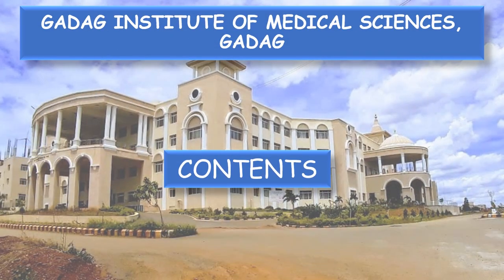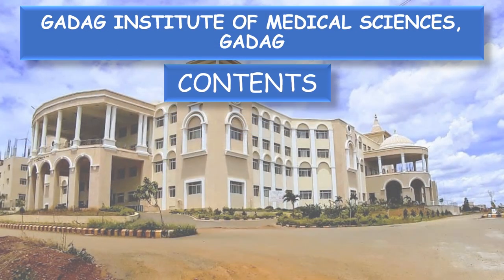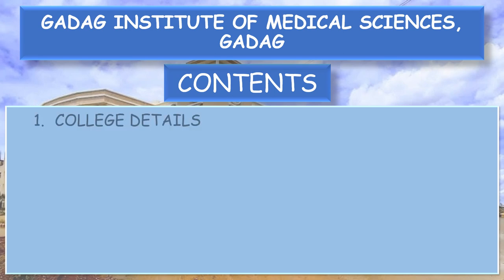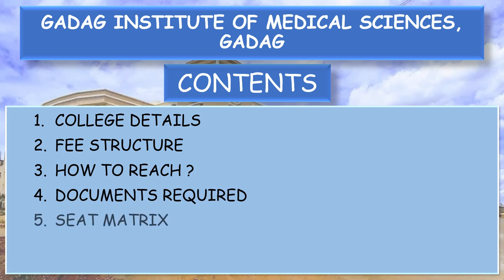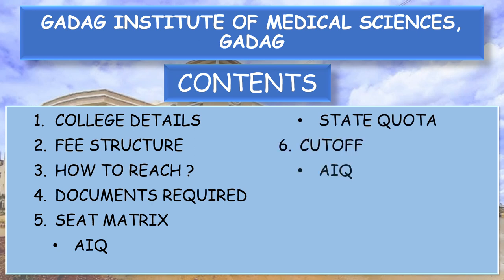First of all, let's look at the contents of the video: college details, fee structure, how to reach the college, documents required, seat matrix of All India Quota and the State Quota, and finally, the cut-off of both All India Quota and the Karnataka State Quota.